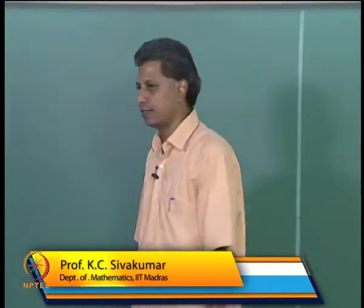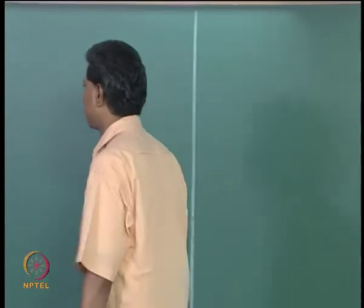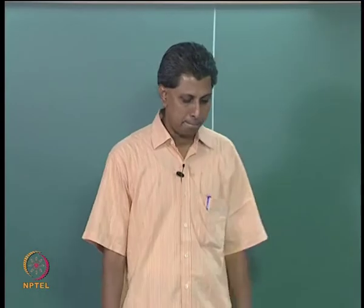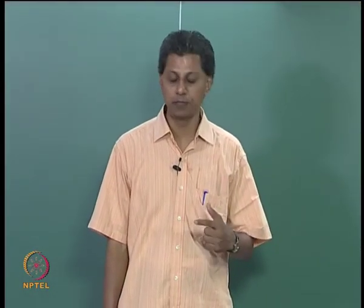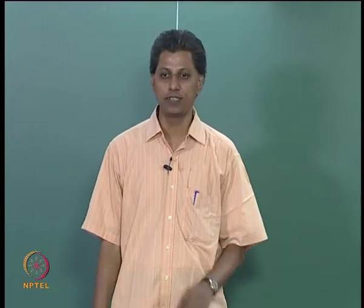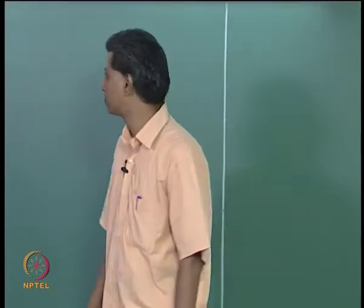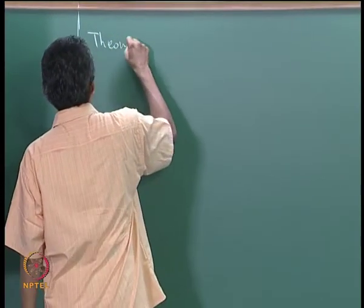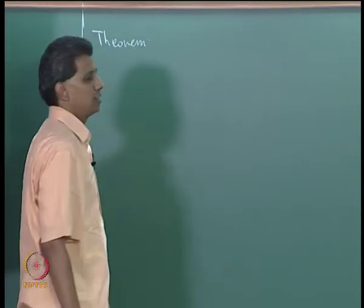We are discussing the notion of the adjoint. We have seen that the adjoint exists for any operator over a finite dimensional inner product space. Let us look at some properties of this adjoint — the correlation and similarities between the adjoint and the operation of complex conjugation. The following theorem lists the properties of the adjoint operator.